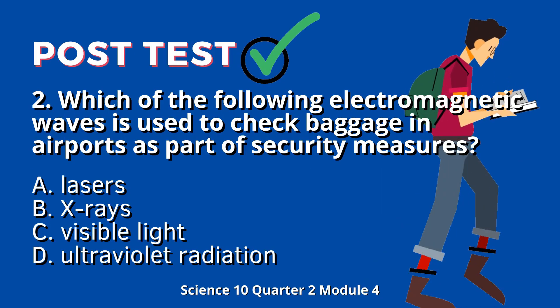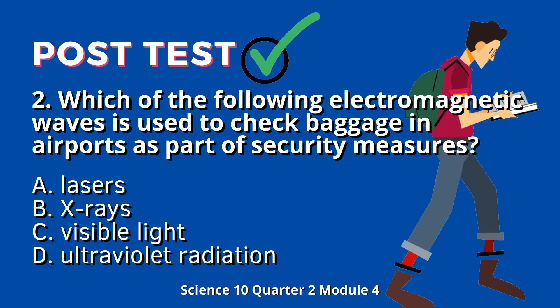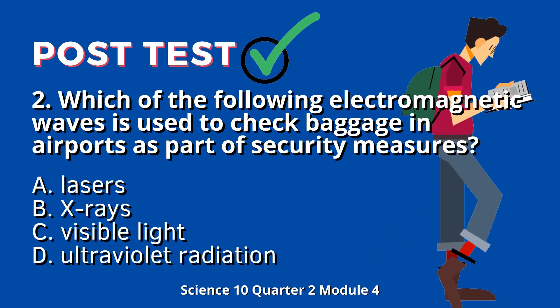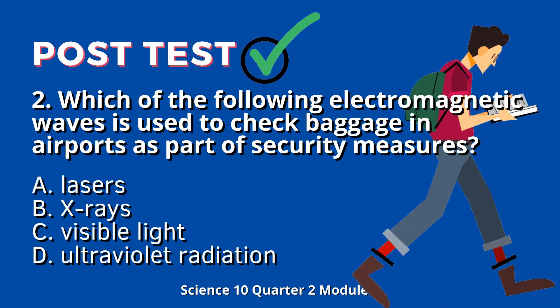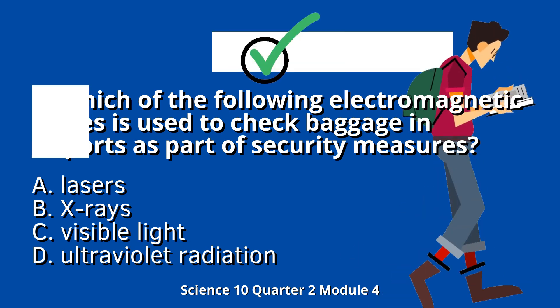Question 2: Which of the following electromagnetic waves is used to check baggage in airports as part of security measures? A. Lasers. B. X-rays. C. Visible Light. D. Ultraviolet Radiation.